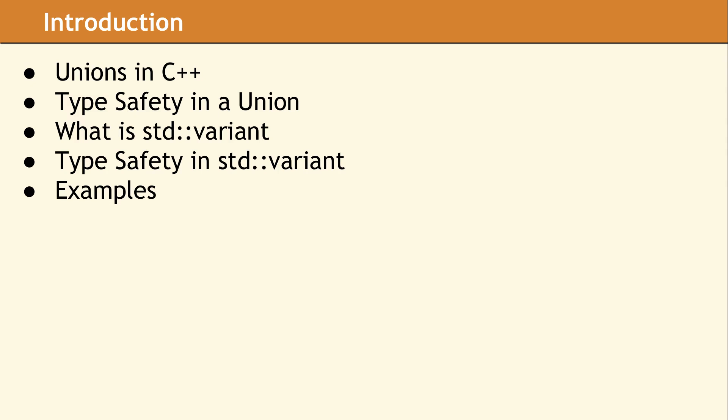Before we talk about std::variant, it is necessary to review the union data type in C++. We will discuss the definition of a union, their drawbacks, and if unions are type-safe, which turns out to be a key element. Then we are going to define std::variant and how it can be used to replace the union data type.